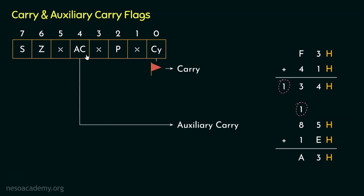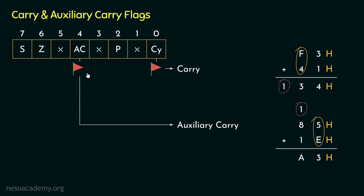Intel calls it AC, which is the acronym for Auxiliary Carry. In this particular addition, since we have got the half carry, the auxiliary carry — that is, bit position number 4 — the flag is going to be raised. So to summarize: when the carry is generated from the addition of the most significant hexadecimal digits, bit position number 0, reserved for the carry flag (CY), is going to be set. On the other hand, when the carry is generated from the addition of the least significant hexadecimal digits, bit position number 4, reserved for the auxiliary carry (AC), is going to be set.